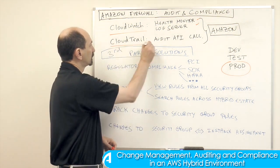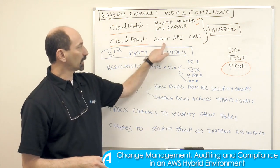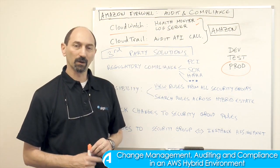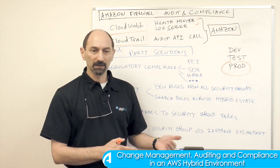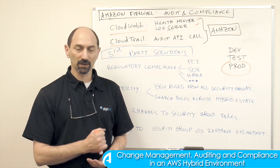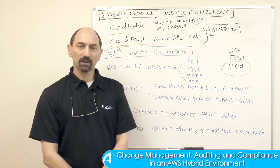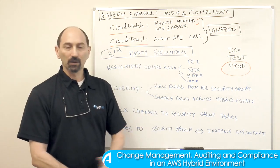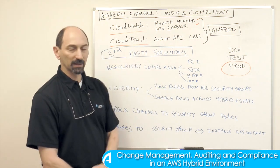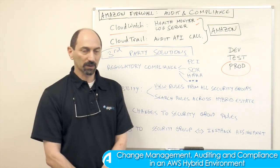A second utility you can use from Amazon is called CloudTrail. This is really an audit system for API calls, so if you have an automated system that automatically modifies settings on your Amazon estate, then using CloudTrail you can see which API calls have been invoked and what they're doing. This is something that is useful to use when you're subject to audit.